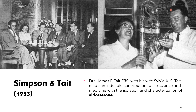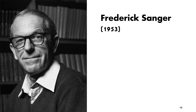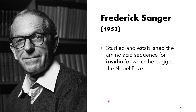We also have doctors James Tait and his wife Sylvia Simpson Tait. They made an indelible contribution to life science and medicine with the isolation and characterization of the hormone aldosterone. Aldosterone is the most potent mineralocorticoid produced by the mammalian adrenal cortex. We also have Frederick Sanger. In the year 1953, he studied and established the amino acid sequence for the hormone insulin. He earned the Nobel Prize in Chemistry in the year 1958 for his work on the structure of proteins, especially that of insulin.